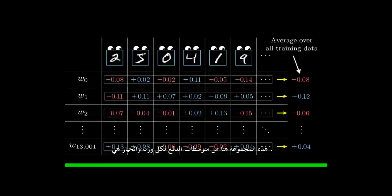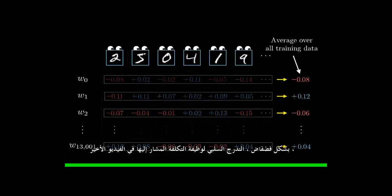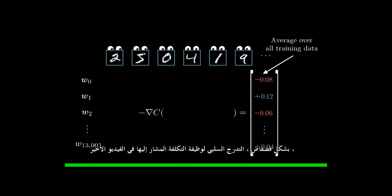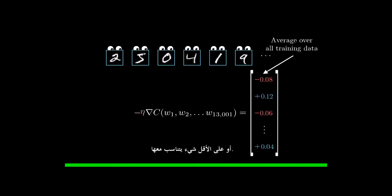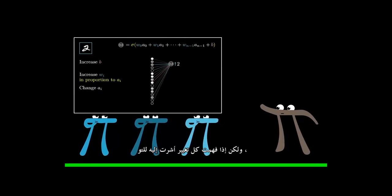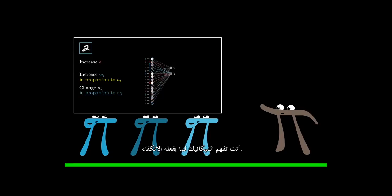This collection here, of the averaged nudges to each weight and bias, is, loosely speaking, the negative gradient of the cost function referenced in the last video, or at least something proportional to it. I say loosely speaking only because I have yet to get quantitatively precise about those nudges, but if you understood every change that I just referenced, why some are proportionally bigger than others, and how they all need to be added together, you understand the mechanics for what backpropagation is actually doing.